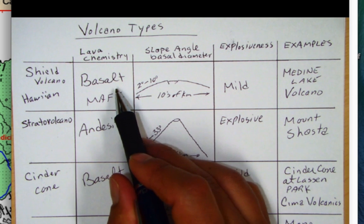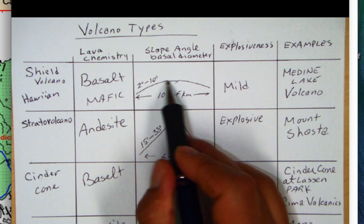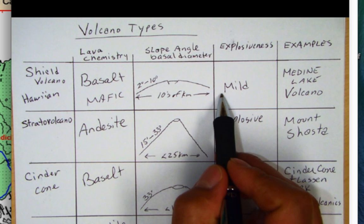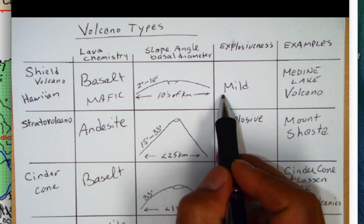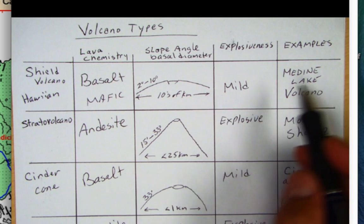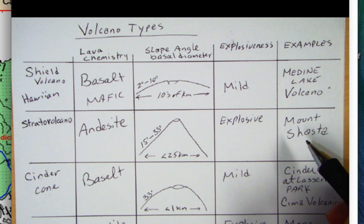Remember it's a pretty fluid runny lava that flows far from the volcanic vent and again because the gas mostly escapes from the volcano at depth we see a mild eruption. So here in California the Medicine Lake volcano is an example.